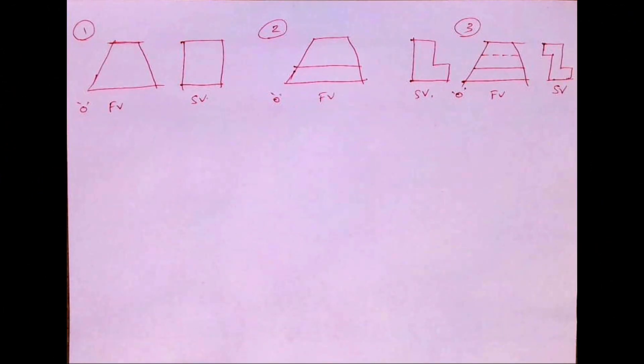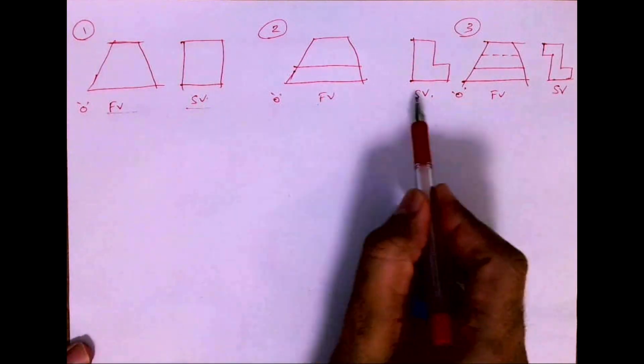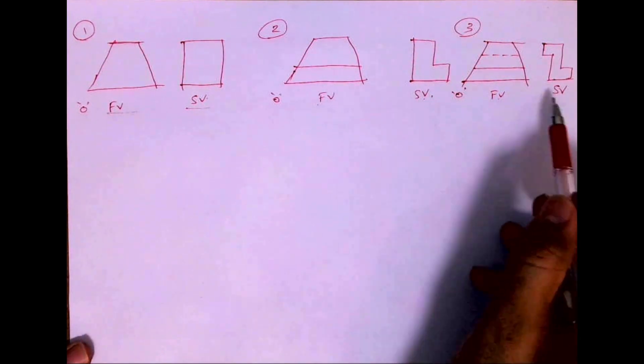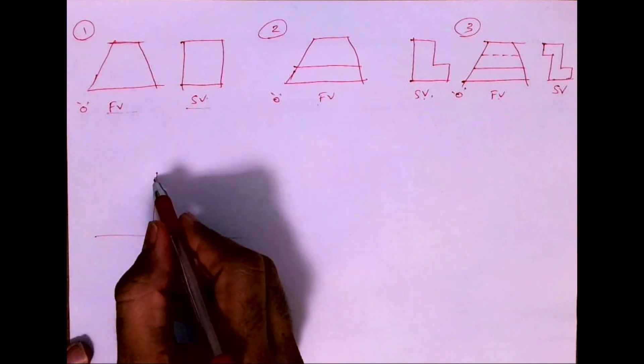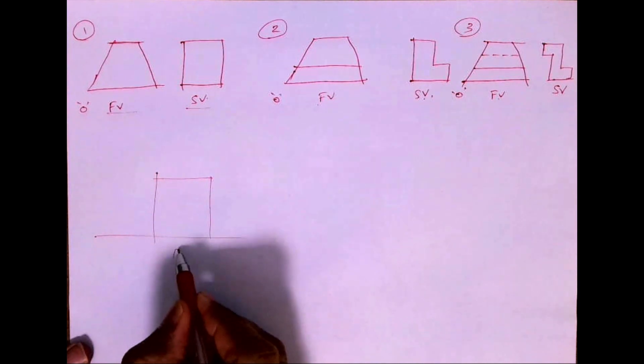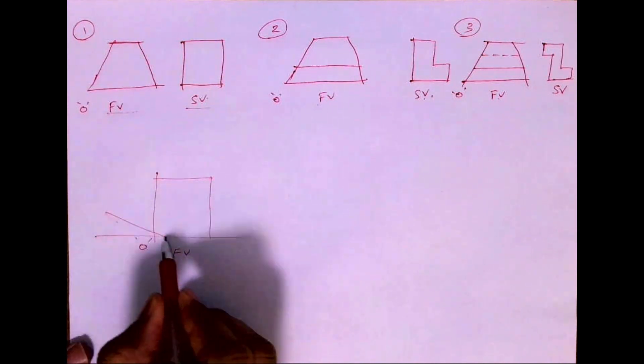Welcome to technical drawing. Today we'll see these sums in obliques. There are three sums: one, two, and three. We have front view and side view. For the first sum, I will draw the front view as it is. Origin is here, and the side view will be inclined.